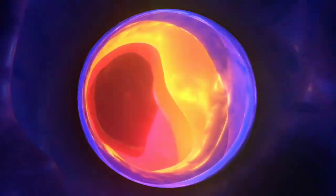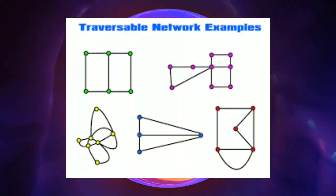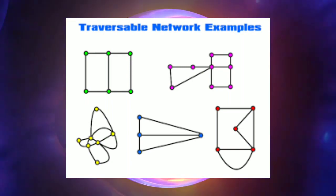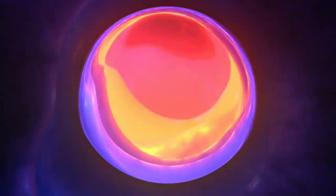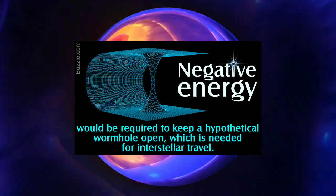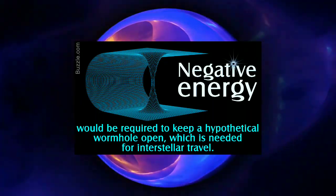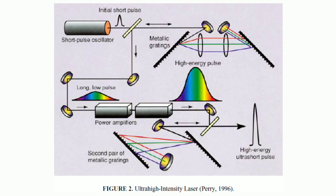Although Schwarzschild's wormhole was not traversable, it still inspired many scientists like Kip Thorne. They theorized that if negative matter or negative energy density exists somewhere, a wormhole can be created.